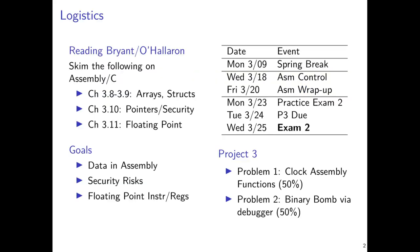In terms of the logistics for the course at the moment, our topics today are mentioned over here. We're briefly going to skate through discussion of data in assembly, talk a little bit about the security issues associated with pointers, especially at the assembly level. Now that we understand how the function call stack works, we're in a position to comment, at least historically, on some vulnerabilities that are present there. And then we'll touch briefly on how floating point numbers look at the assembly level.